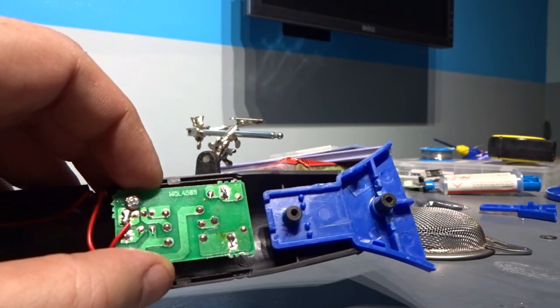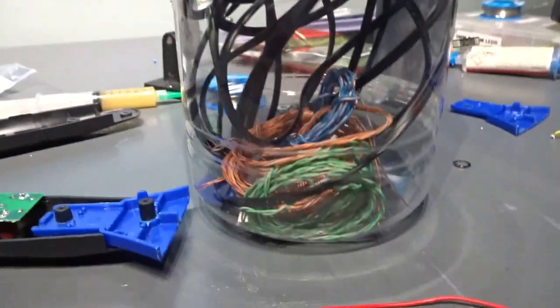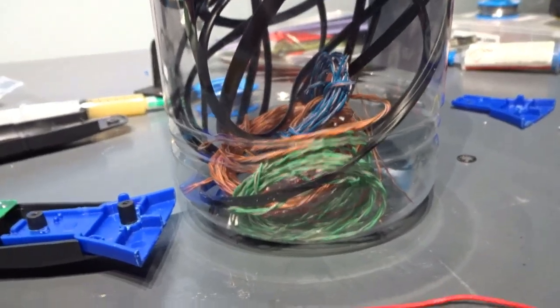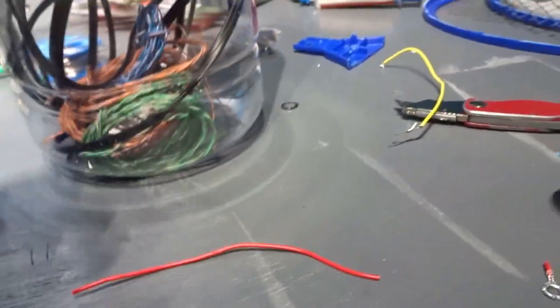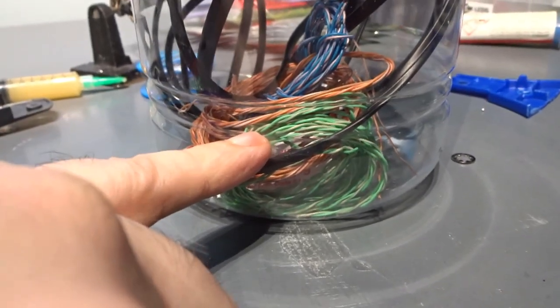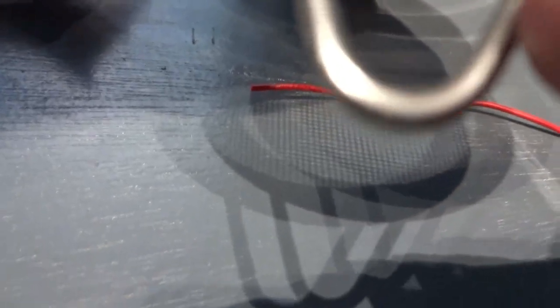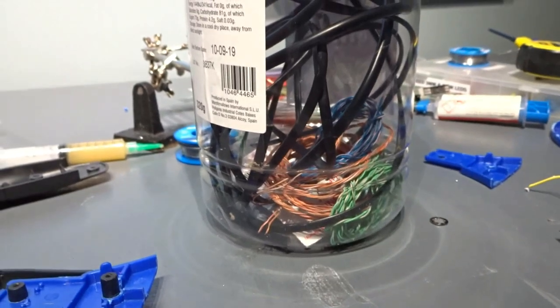When I'm working on my model railway and anything electrical, I have a container like this and put old wires in there. Never throw wires away because you never know when you might need some. I'll be using cat5 for this because it's single core, very strong, and very good quality copper.